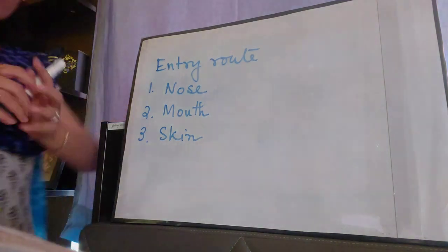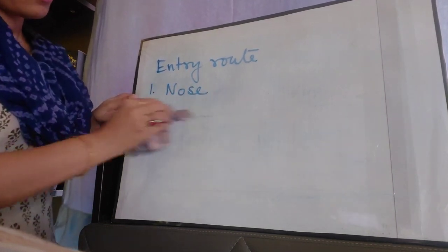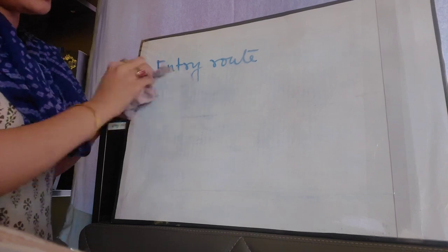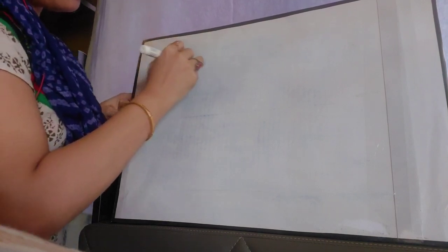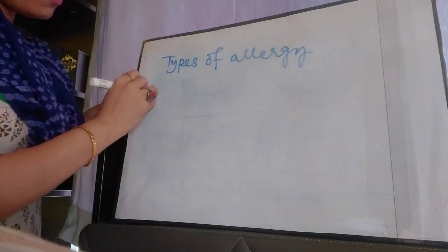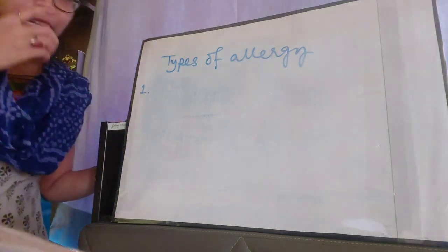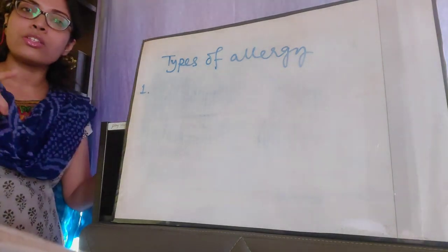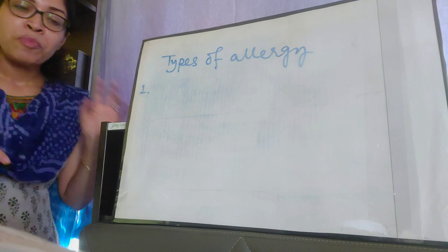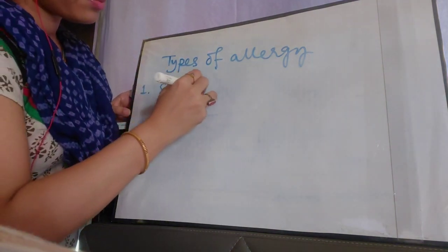Now we will move on to the next topic of this chapter, which is types of allergy. Based on the period of occurrence — that means when the allergy is occurring — allergy can be of two types. Number one is seasonal allergy.